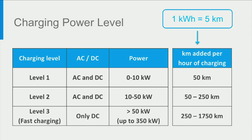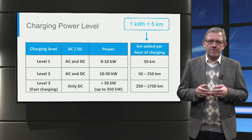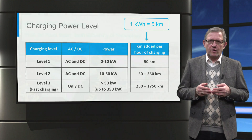If we assume that an electric vehicle can drive 5 km using 1 kWh of energy, these charging powers can be translated into km of range that can be added per hour of charging. We can easily see how Level 1 and Level 2 charging is sufficient for daily commuting needs, and Level 3 charging is useful for quick highway charging.